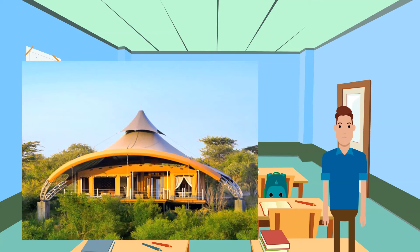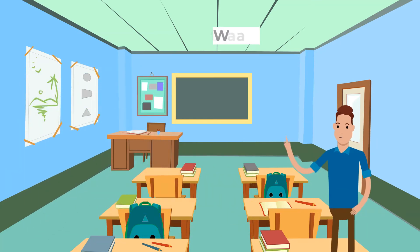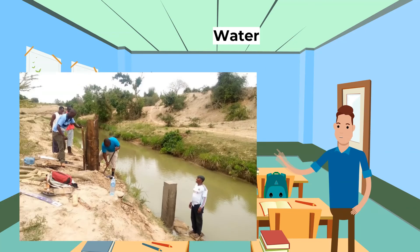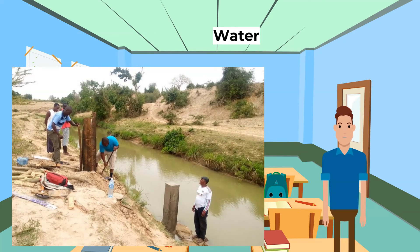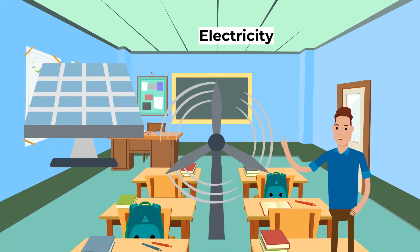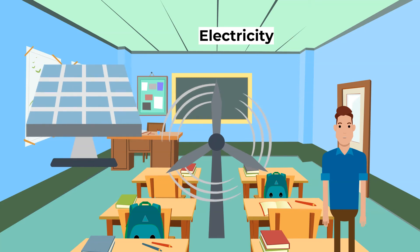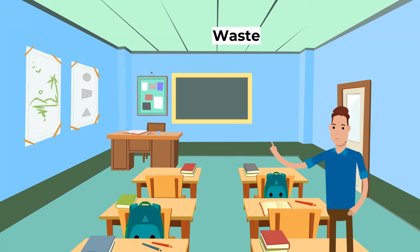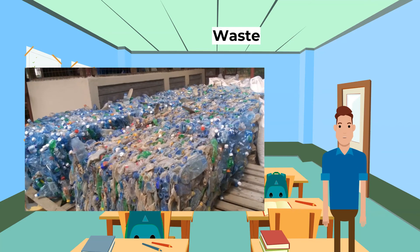Thirdly, water: water management systems should be developed to ensure new buildings do not take too much water from the local ecosystem. Grey water from washing and black water from toilets and sewage needs to be filtered and reused. Next, electricity: this should be generated from a sustainable source such as solar panels.